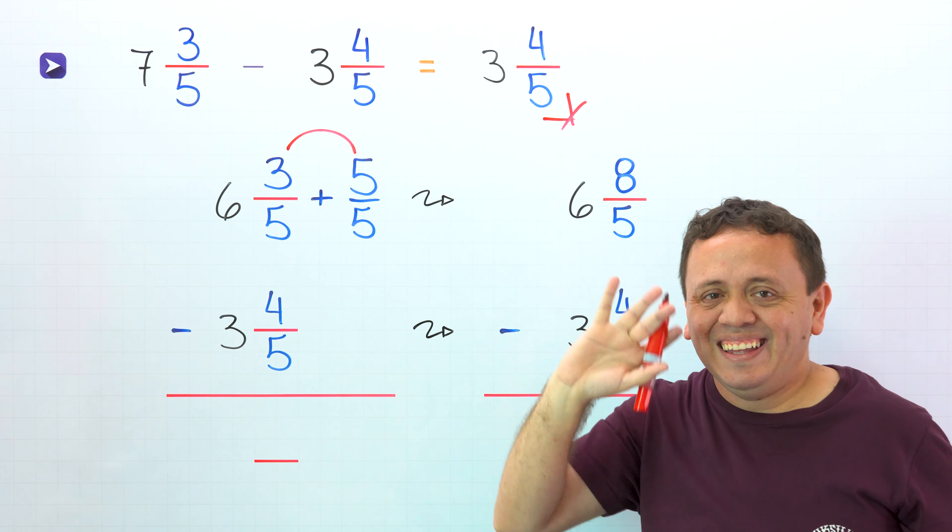Finally, we'll subtract the whole numbers. 6 minus 3 gives us 3. The answer is 3 and 4 fifths. In that way, 7 and 3 fifths minus 3 and 4 fifths gives us 3 and 4 fifths.